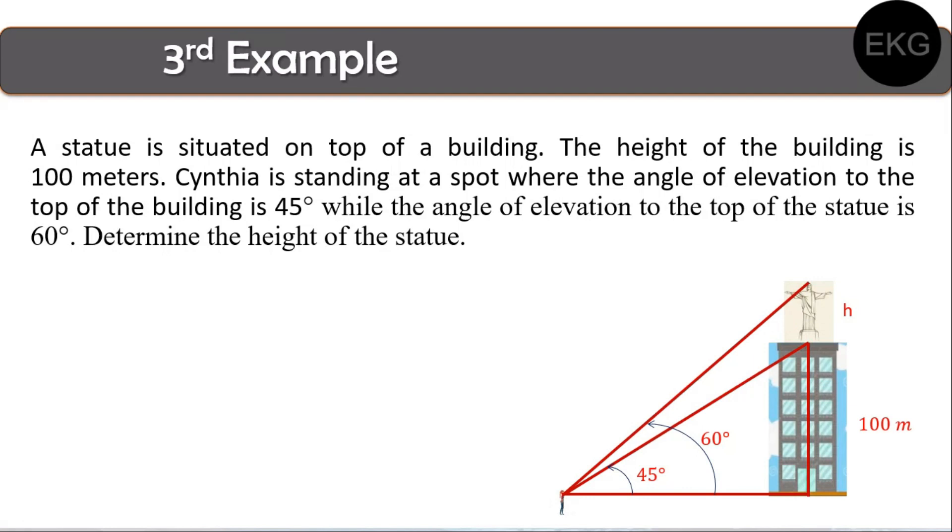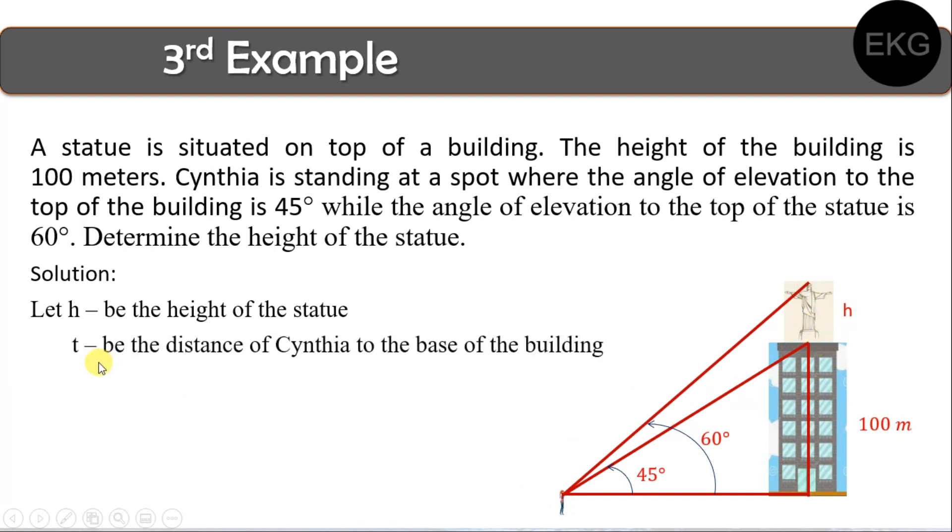Now, to start the solution, we let h be the height of the statue, and t be the distance of Cynthia to the base of the building. So itong distance na to, from the base of the building papunta kay Cynthia, we let that as the variable t. Bakit kailangan natin maglet ng variable dito? Bakit hindi nalang h? Kasi yun lang yung hinahanap.